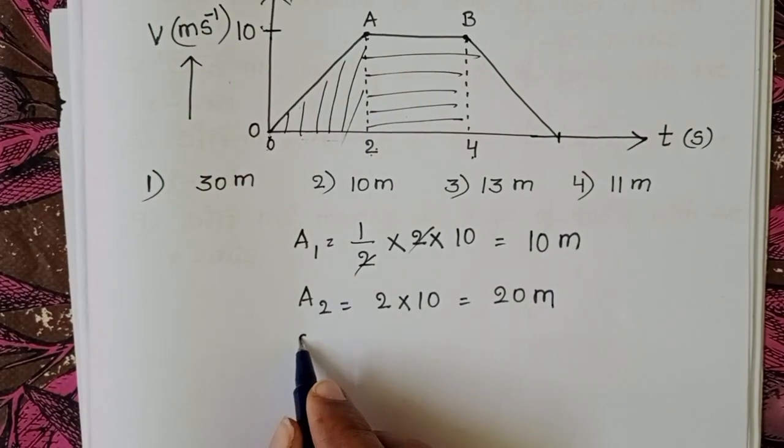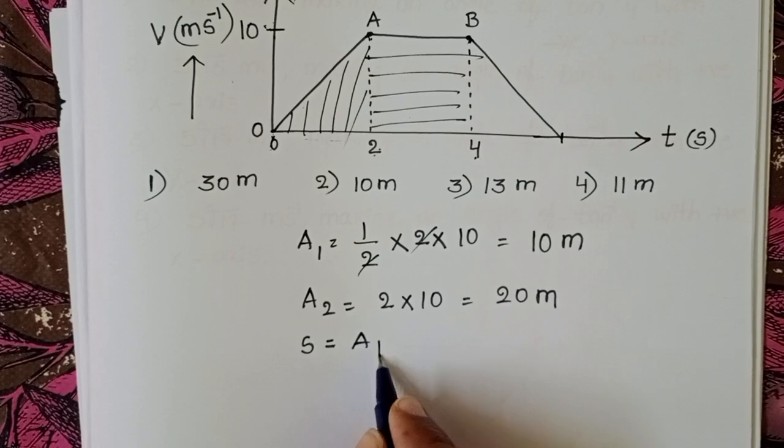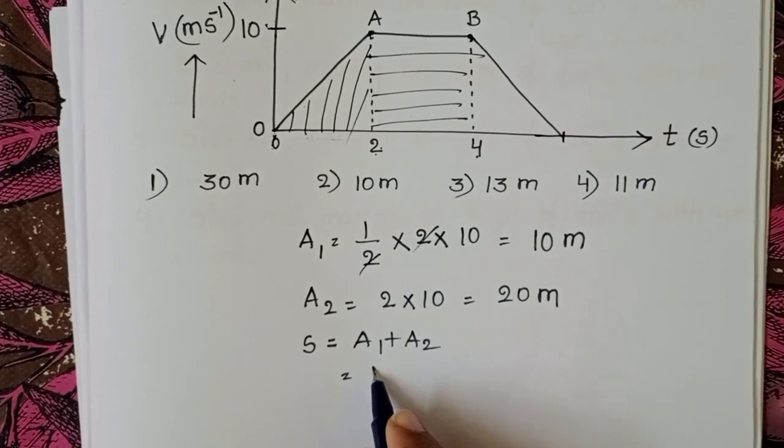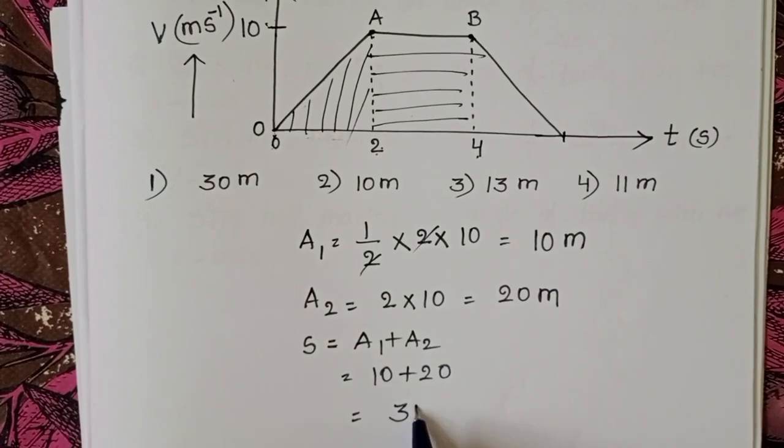Distance covered by the object from 0 to 4 seconds, S equals A1 plus A2. 10 plus 20 equals 30 meters.